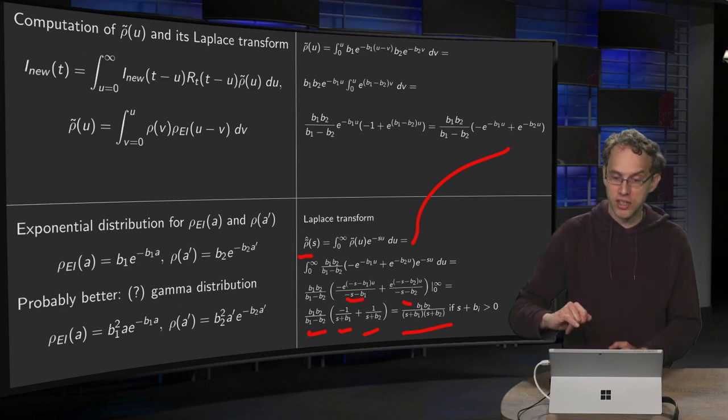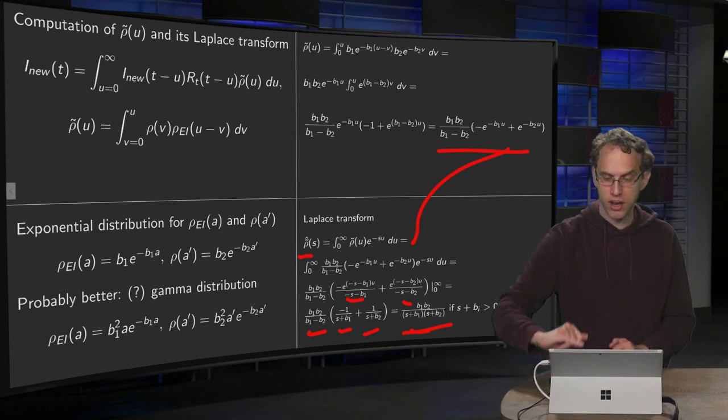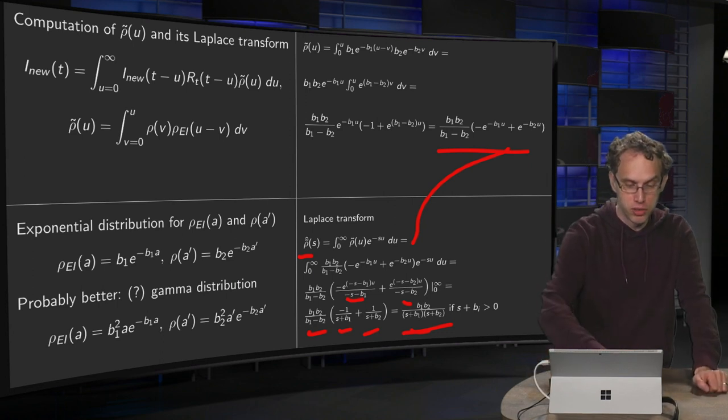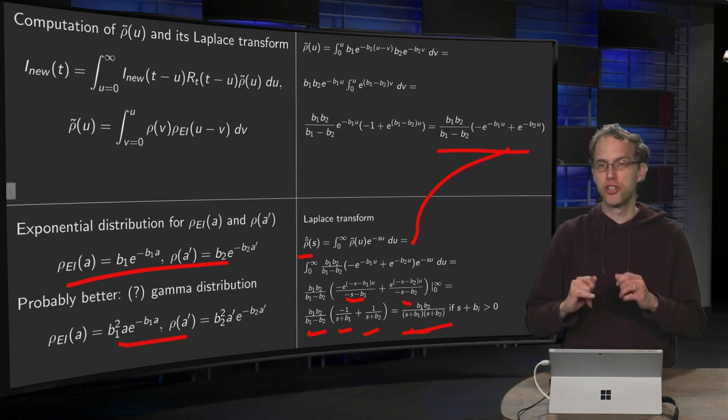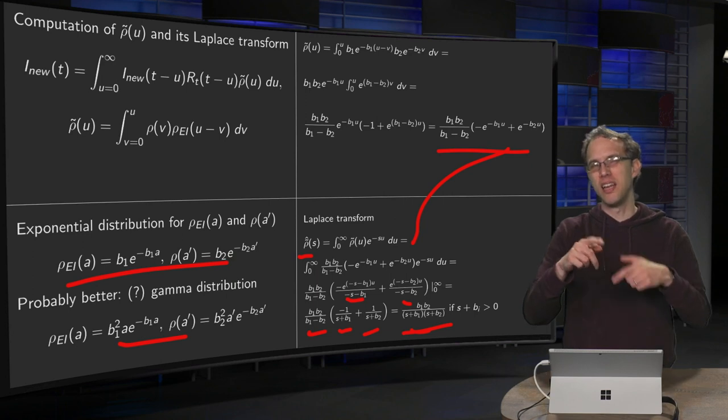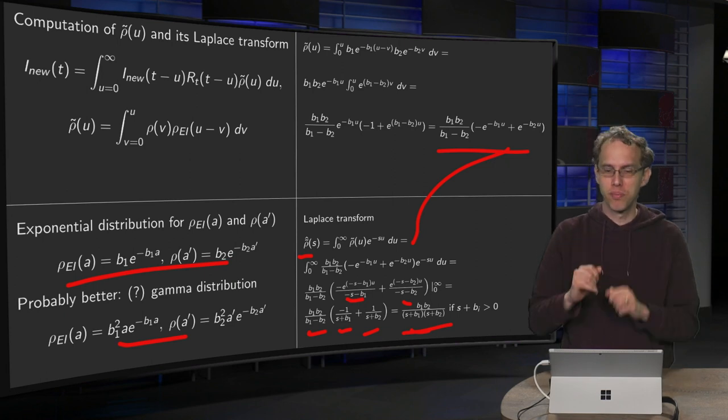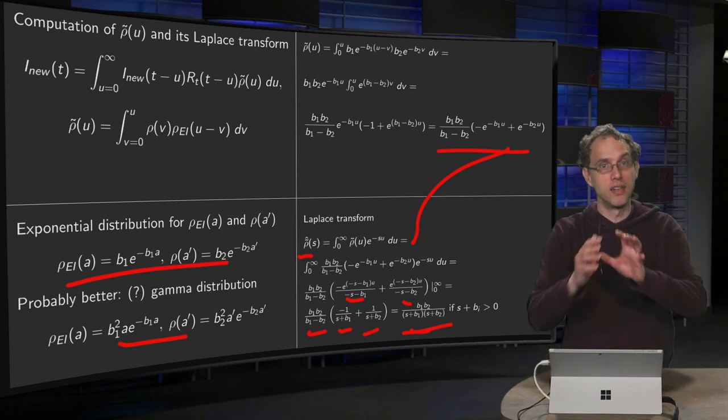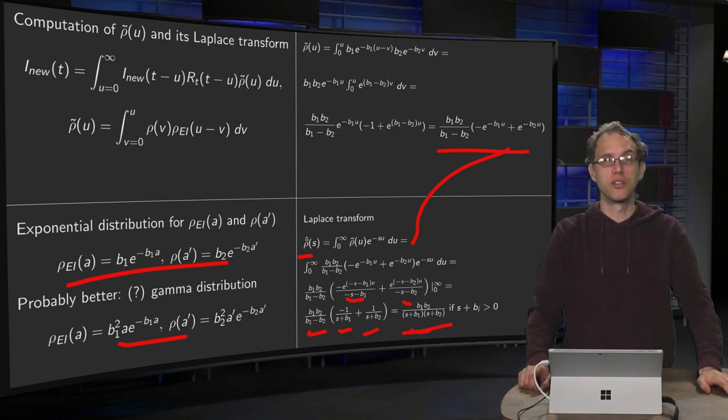So we have a nice ρ tilde over here, not too difficult, and a nice Laplace transform. That is the advantage of using exponential distributions over here. If you would have used the gamma distributions over here, it's not such a big deal. Integrals become a bit more involved, you have to do some partial integrations. So the functional forms become a bit more difficult. However, you can still use the same procedure, you can generalize it. But keep in mind that you will get expressions which look a bit more complicated than this.